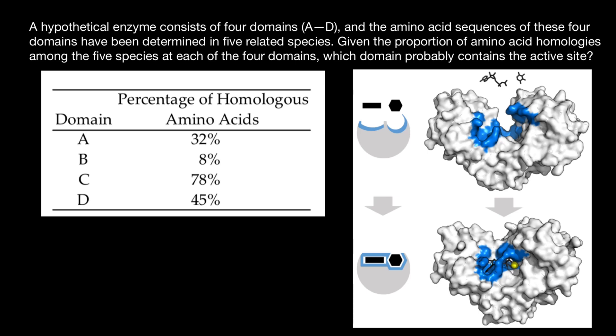Hello and welcome to Nikolai's genetics lessons. Today's question is: a hypothetical enzyme consists of four domains A through D, and the amino acid sequences of these four domains have been determined in five related species. Given the proportion of amino acid homologies among the five species at each of the four domains, which domain probably contains the active site?